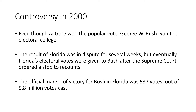One reason the 2000 election was so controversial is that Al Gore won the popular vote but George W. Bush won the Electoral College. Focusing on Florida, the result was in dispute for several weeks — there were recounts, nobody knew who had won, and eventually the Supreme Court ordered a stop to the recounts. The official margin of victory for George W. Bush in Florida was only 537 votes out of a total of 5.8 million cast. If only 538 people who had voted for Buchanan or Nader had voted for Gore, that would have swung the entire election.